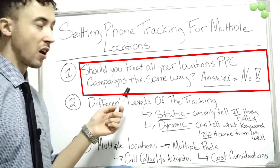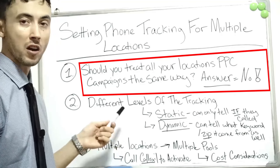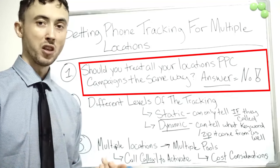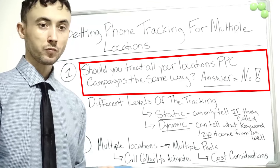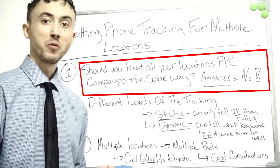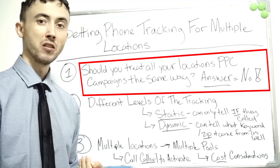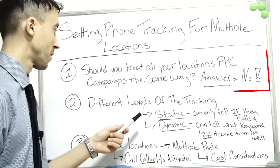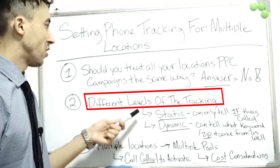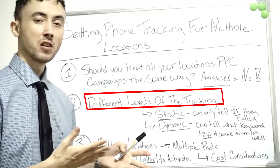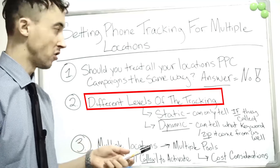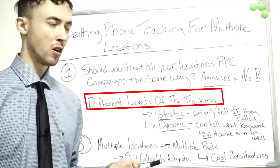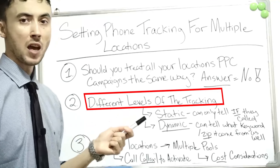Beyond that, there are three things I wanted to mention about call tracking specifically for multiple locations, or if you have a site with multiple numbers — maybe one number for one type of sales and another for a different type. Obviously for support numbers you don't need to track those. Regardless of how many numbers you need to track or how many locations you have, you'll still have to determine the type of tracking you're using.